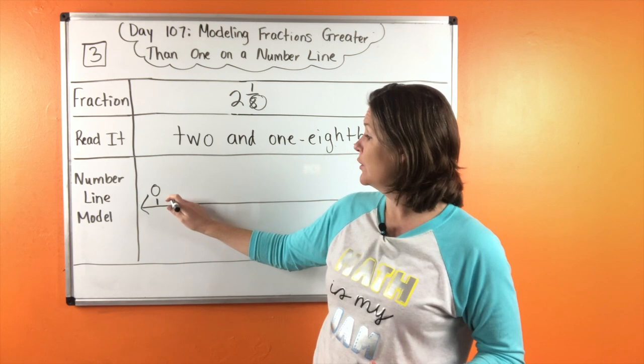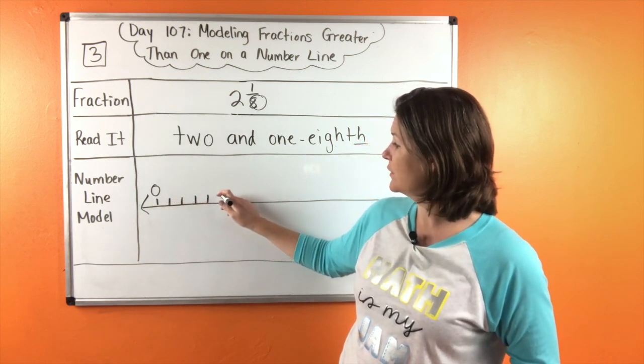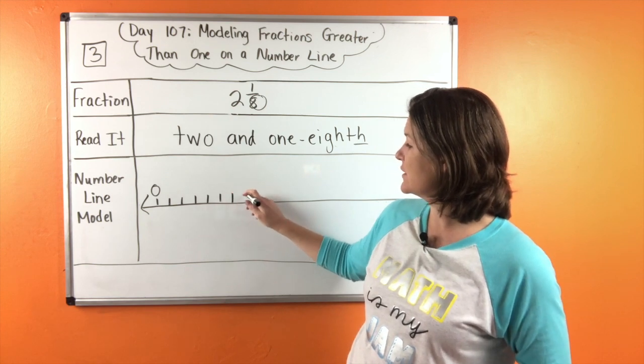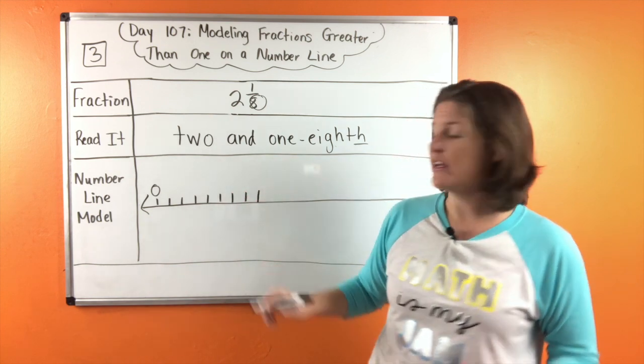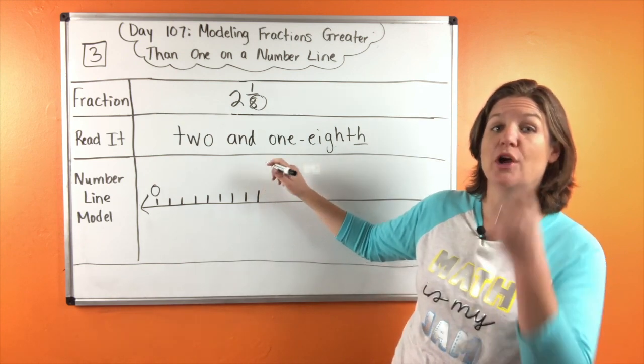So one, two, three, four, five, six, seven, eight. On that eighth jump right there, this would be the hole number one.